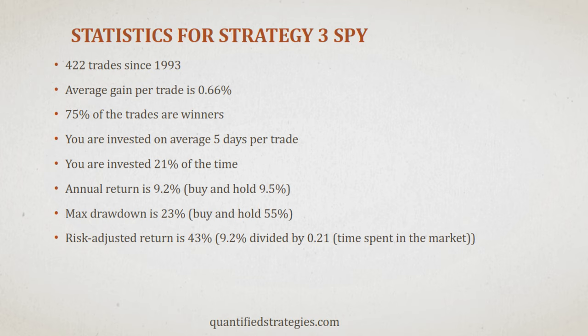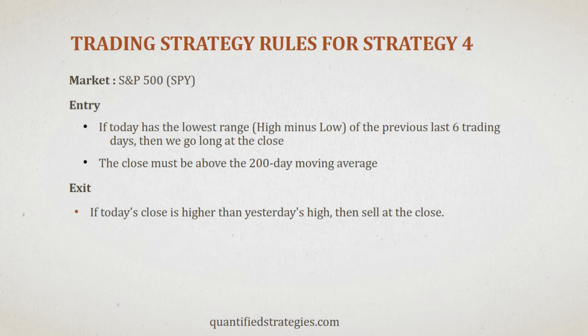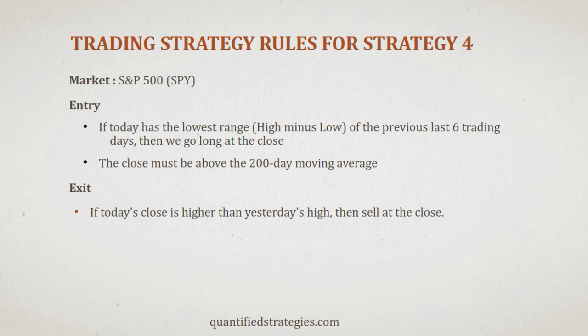Let's go to today's fourth strategy. This one is a bit different compared to the first three because it's mainly based on volatility and, to a lesser extent, mean reversion. We buy when today's range is lower than the daily range of the previous six trading days, and the close must be above the 200-day moving average, which serves as a trend filter — we only want to take trades when the market is bullish. We exit when today's close ends above yesterday's high.